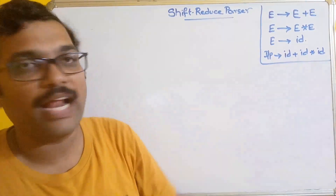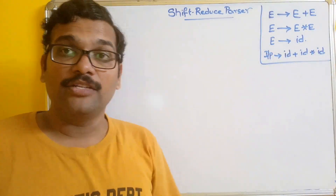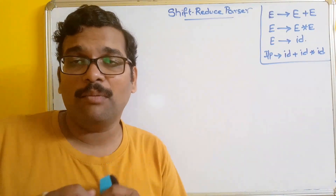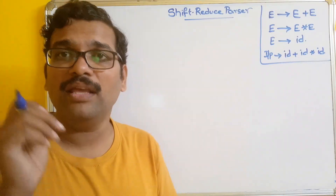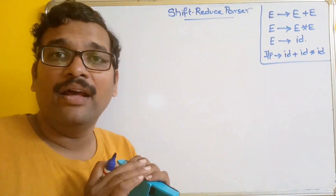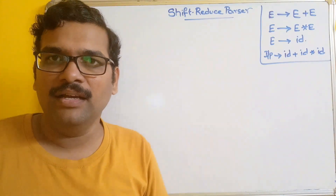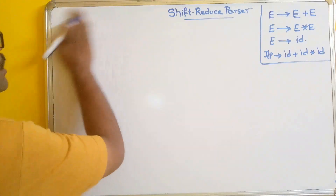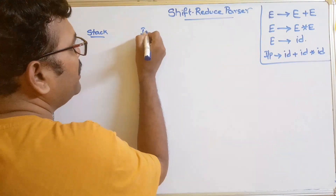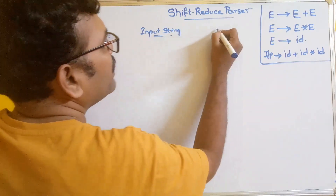Let us take the example context free grammar: E → E plus E, E → E star E, and E → ID. Note that you need not worry about left recursion or left factoring in bottom-up parsing — those concerns only apply to top-down parsing. We set up a table with the stack on one side, the input string on the other, and the action to be performed.